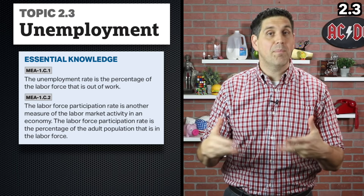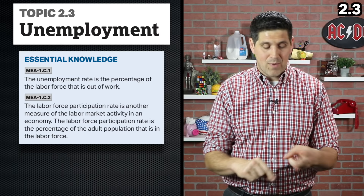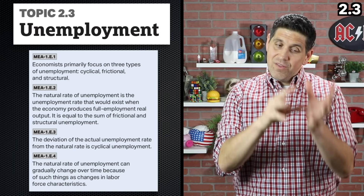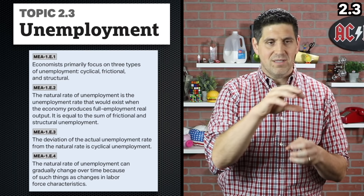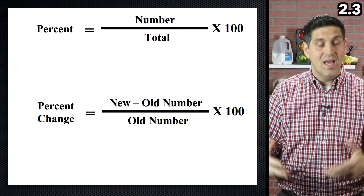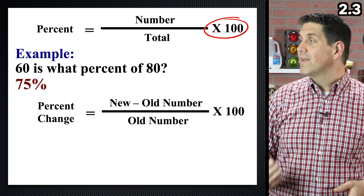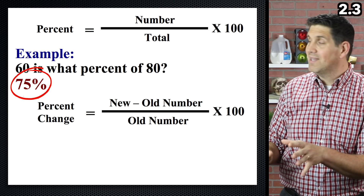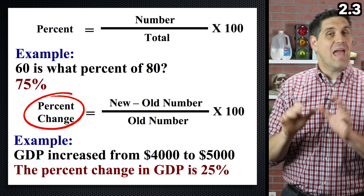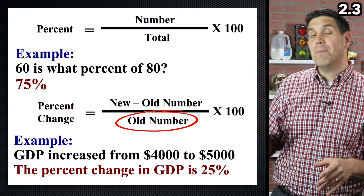Here in topic 2.3, we're talking about unemployment, and there's a lot of vocabulary to understand: the labor force, labor force participation rate, unemployment rate, the different types of unemployment, and the natural rate of unemployment. There are also calculations — your teacher might give you a scenario with how many people are in society and the labor force and ask you to calculate the unemployment rate. Calculating percent is easy: divide the number you have by the total and multiply by 100. For percent change, take the new number minus the old number, divide by the old number, then multiply by 100.